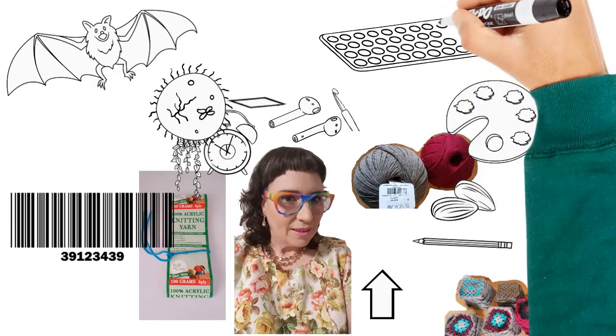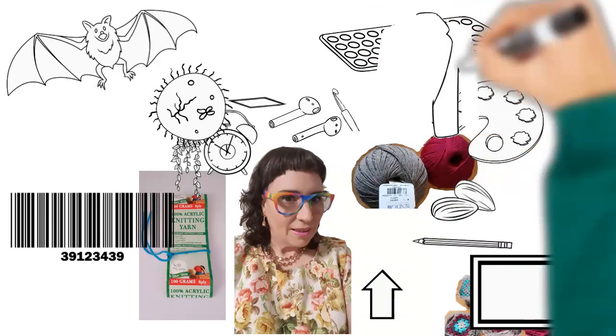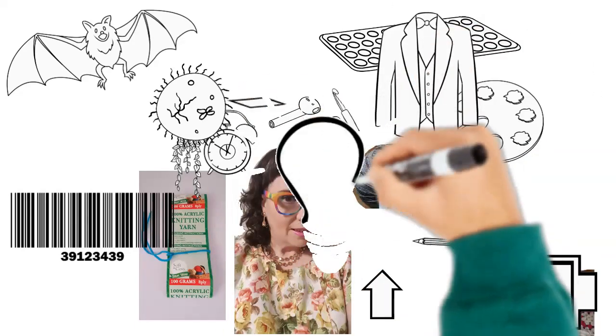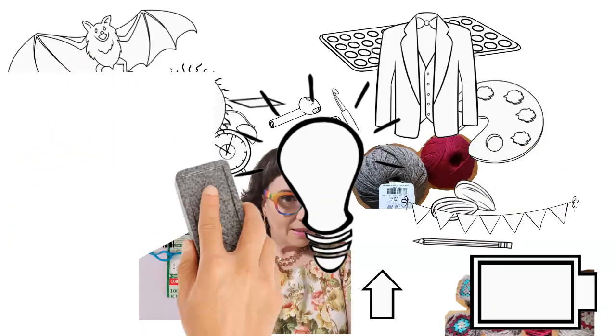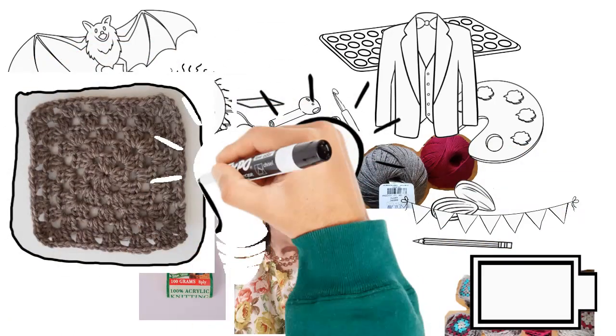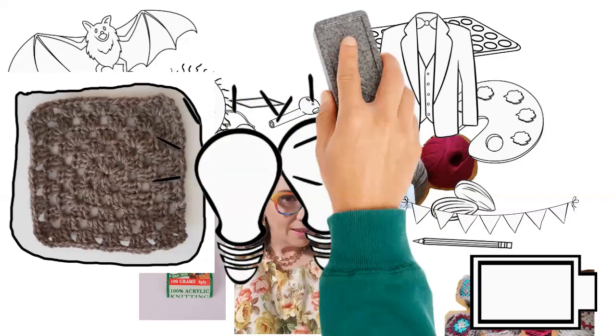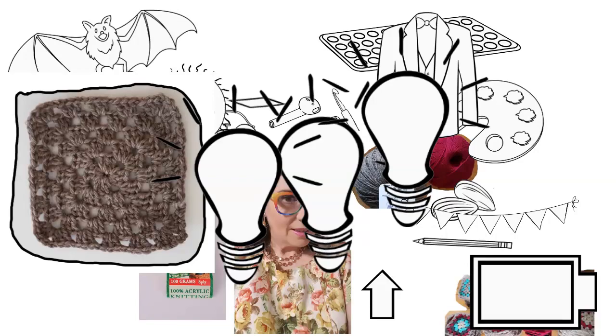These things are a bat, a mat, a suit jacket, a light bulb, some bunting, a granny square, another light bulb, and another light bulb, all on top of each other.